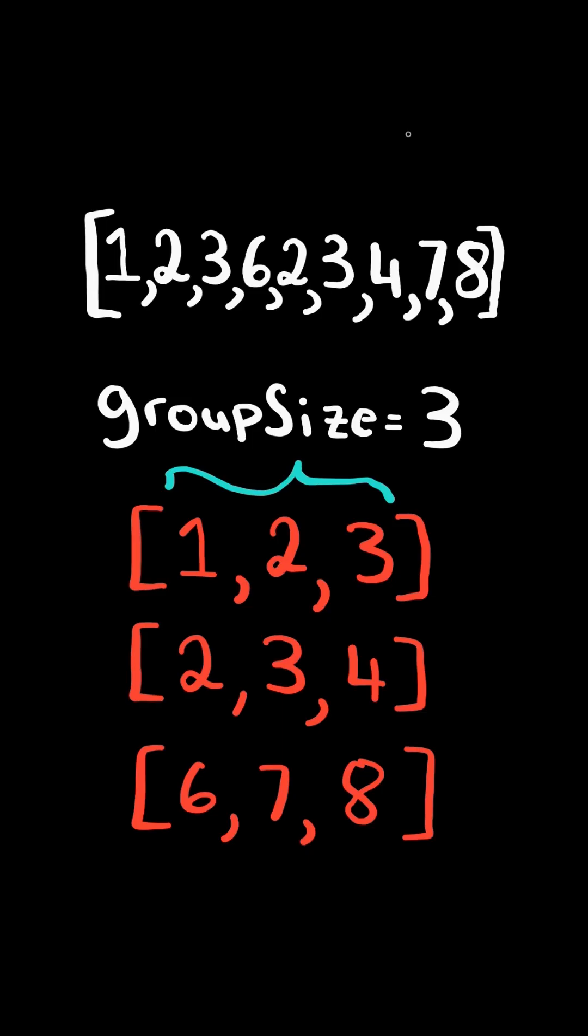Hand of straights. Rearrange the cards into groups of size group size, where each group consists of consecutive cards. Return true if the cards can be rearranged.